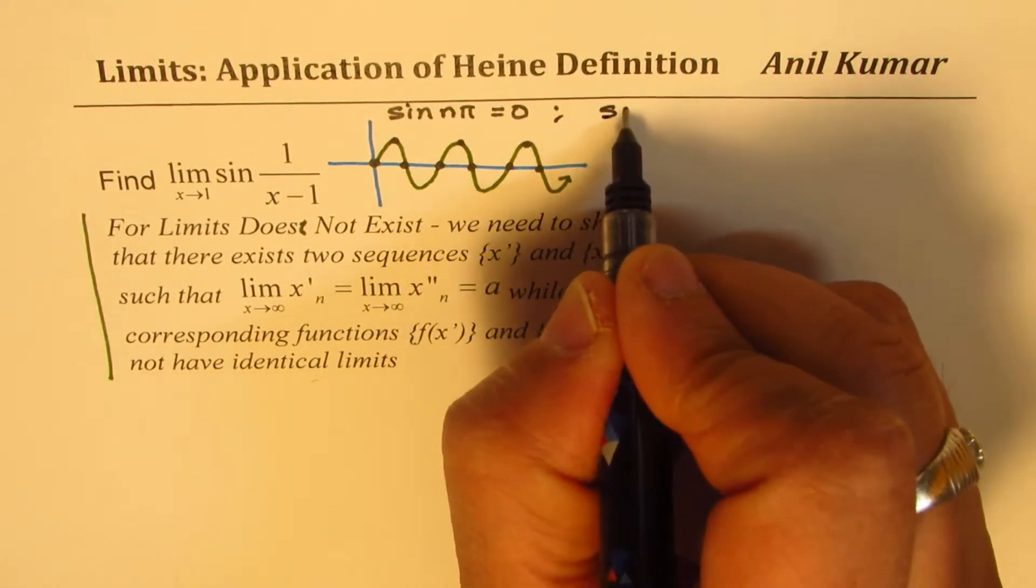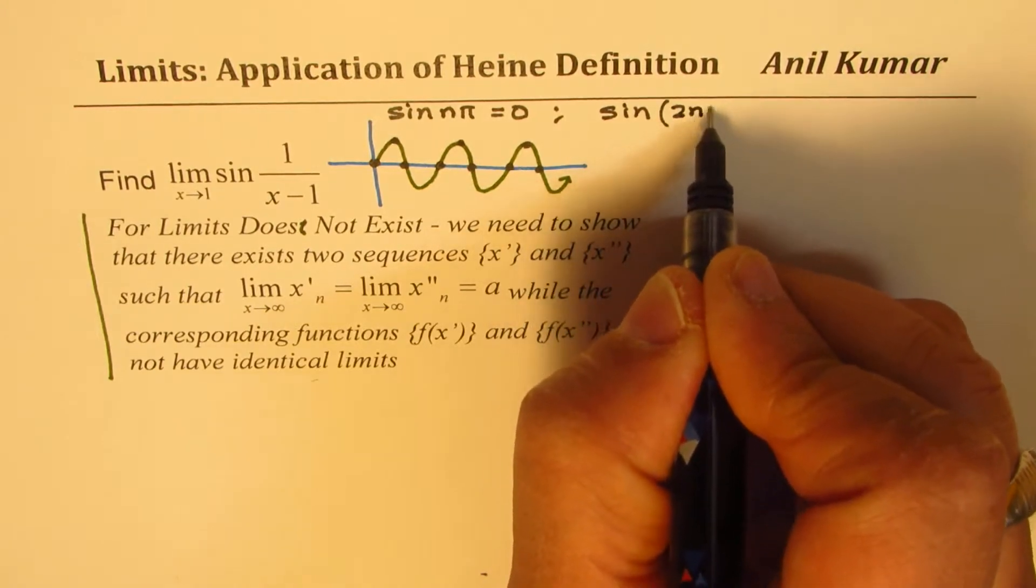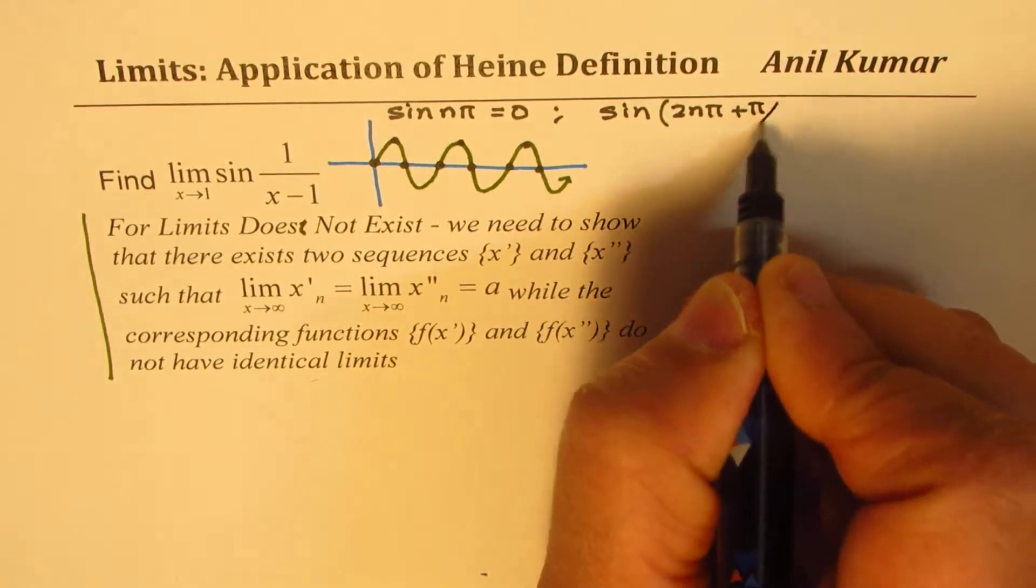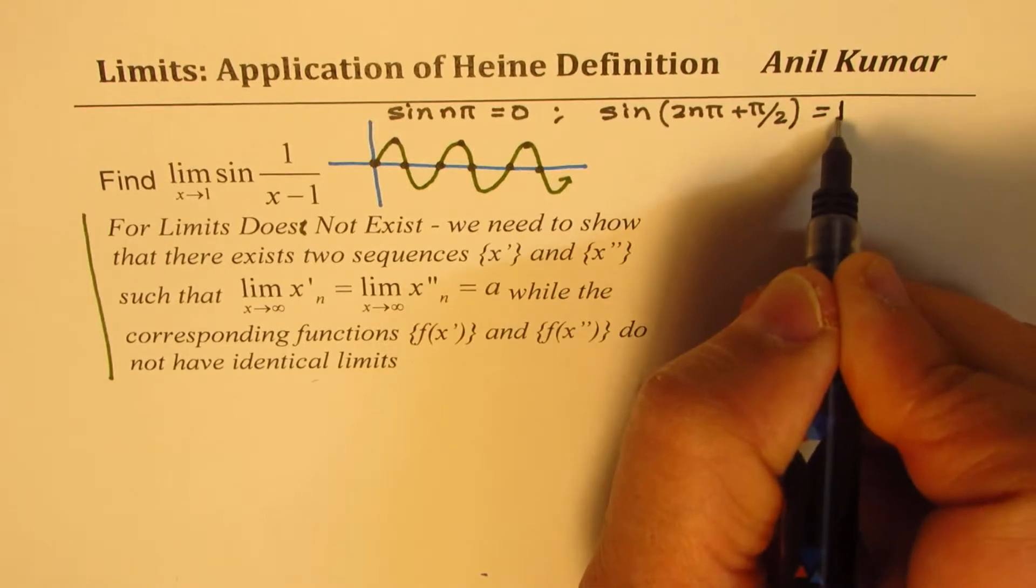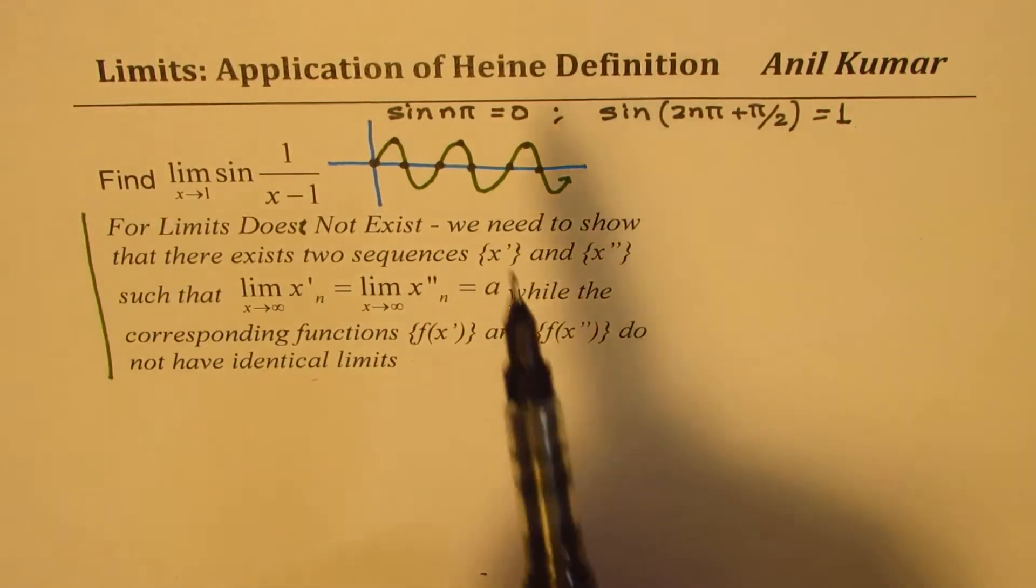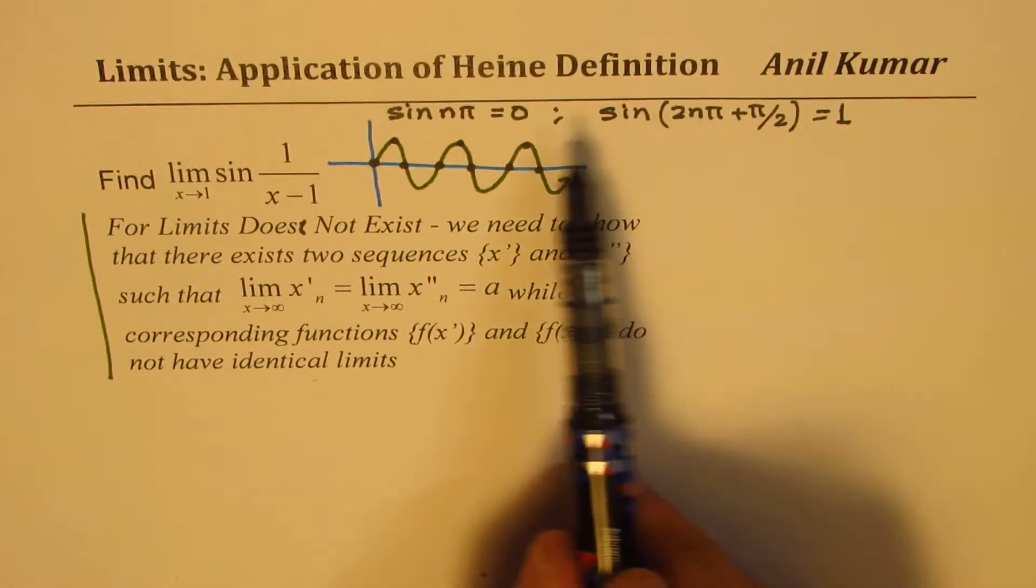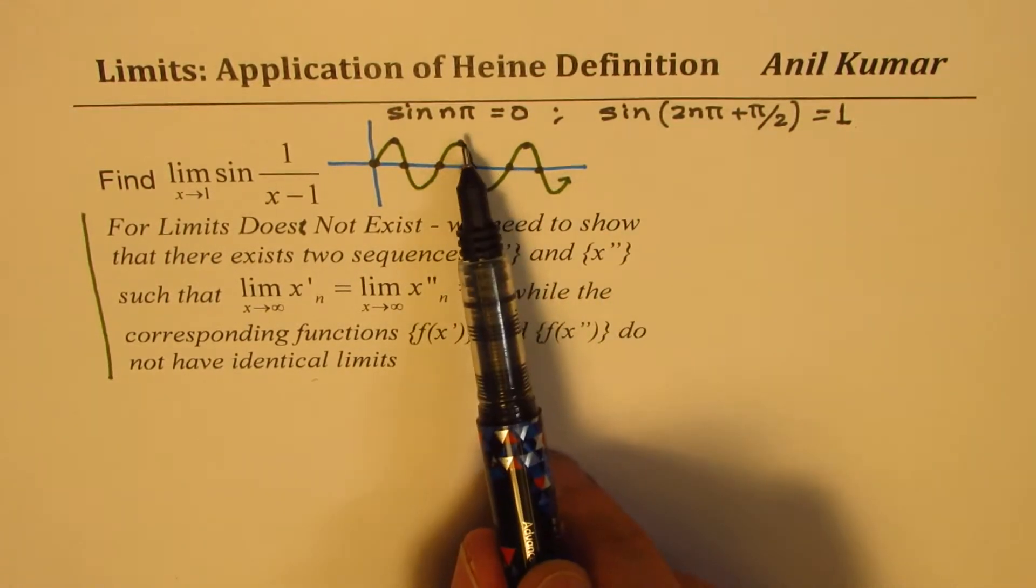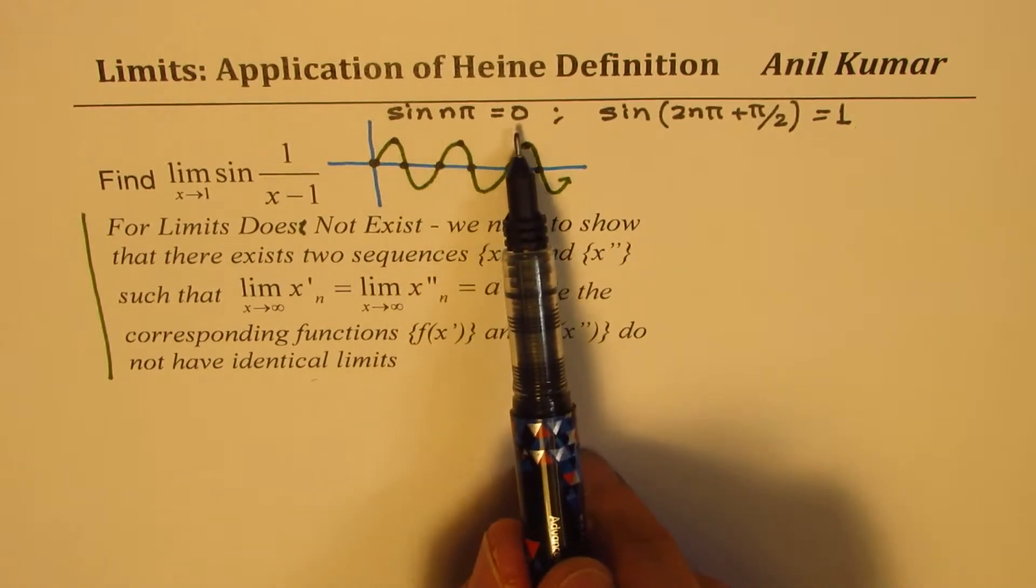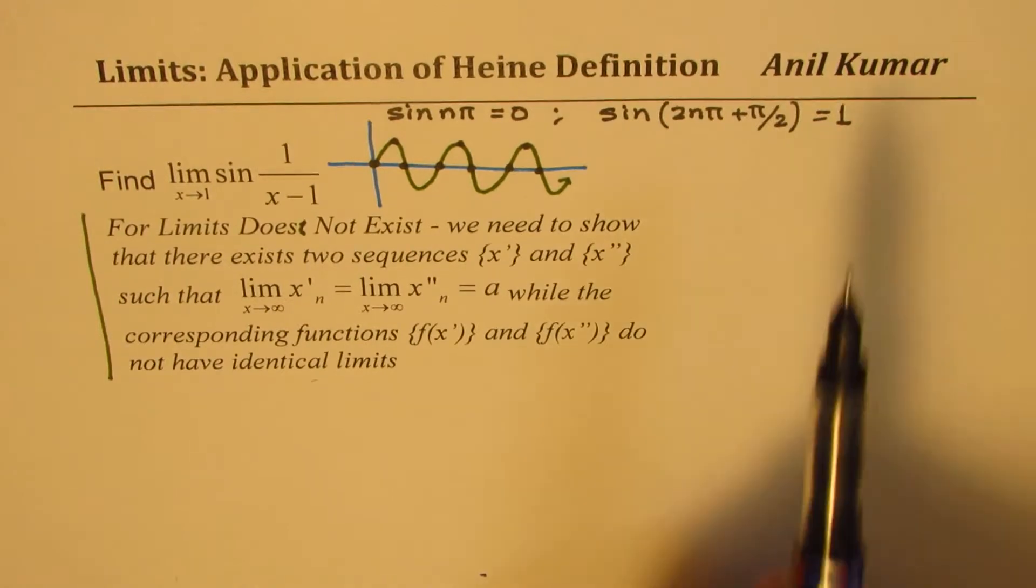So we also know that sine of 2n pi plus pi by 2 is equal to 1. That means we know if n approaches infinity for these two functions, the value of sine of 2n pi will be 0 and sine of 2n pi plus pi by 2 is 1.